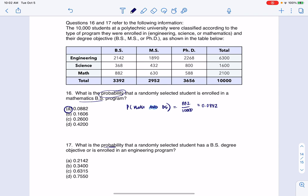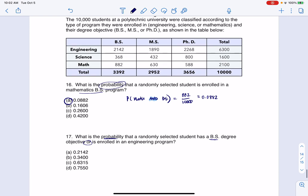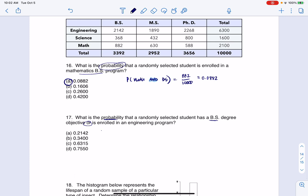What is the probability that a randomly selected student has a BS degree or is enrolled in engineering? So if I want the or, I'm going to scroll up a little bit so I can write this out. I want the probability of BS or engineering.